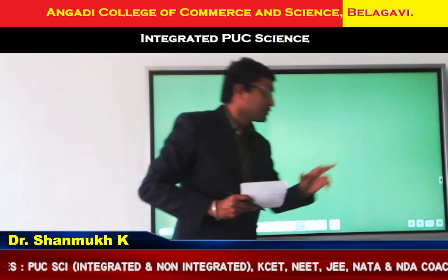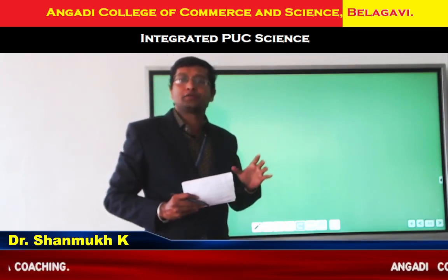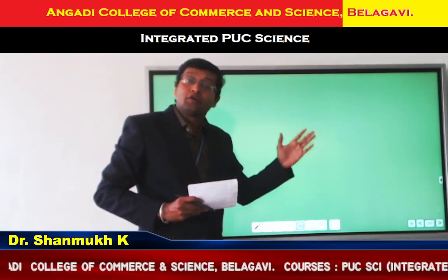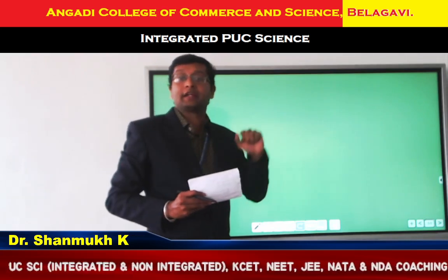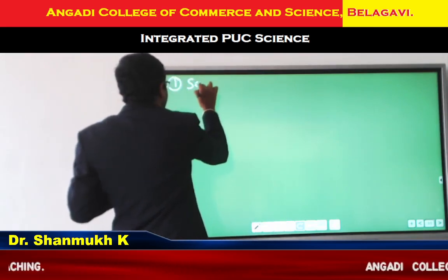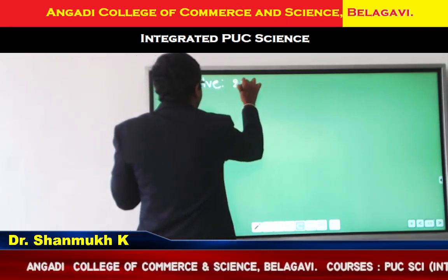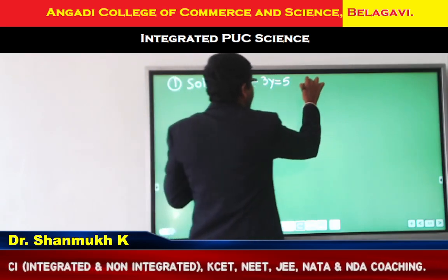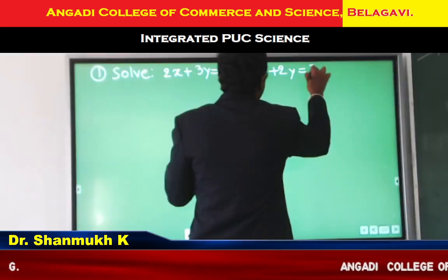I am going to use elimination method here. Elimination method is very easy. If it comes for two marks, you can use elimination method — we should eliminate either the X variable or the Y variable, and using that, find the value of X and Y. Let us begin with the first example. The question is: solve 2X plus 3Y equal to 5 and X plus 2Y equal to 3.